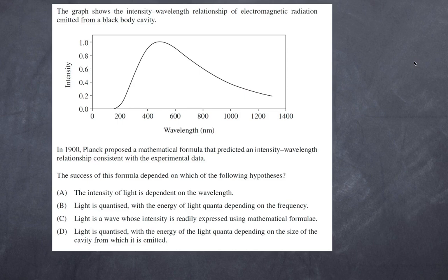Is it C: light is a wave whose intensity is rarely expressed using a mathematical formula? And D: light is quantized with the energy of the light quanta depending on the size of the cavity from which it is emitted? So the first thing to understand with this particular question is that Max Planck had a conundrum.